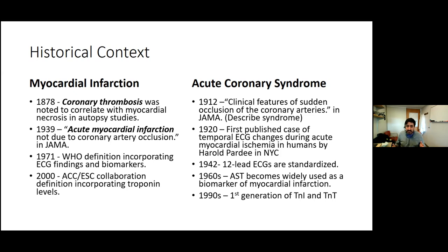They stopped calling it coronary thrombosis and started calling it acute myocardial infarction — a nice precursor to what we'll discuss, which is that not all things that hurt the heart are coronary thrombosis, but the big thing we care about is atherothrombosis. As we went from diagnosing this at autopsy to diagnosing it in living patients, definitions emerged incorporating ECG findings and biomarkers. The first biomarker was AST. It took until the 90s and first-generation cardiac biomarkers — the troponins — before we had our clinical working term: acute coronary syndrome.